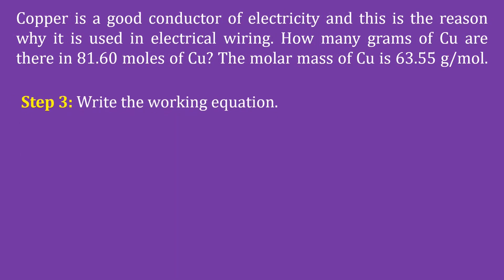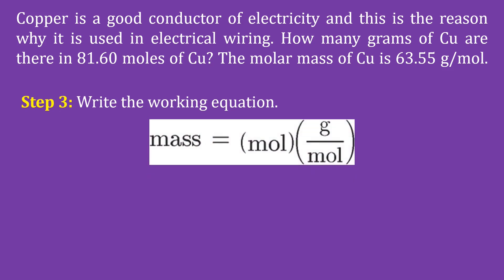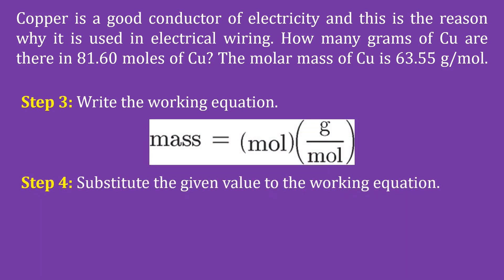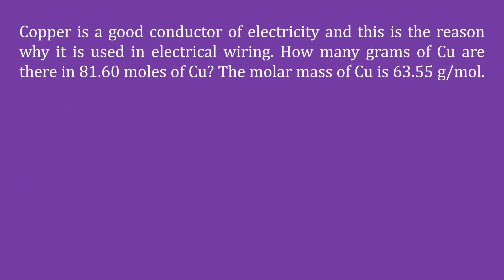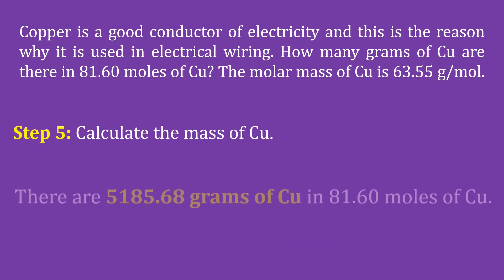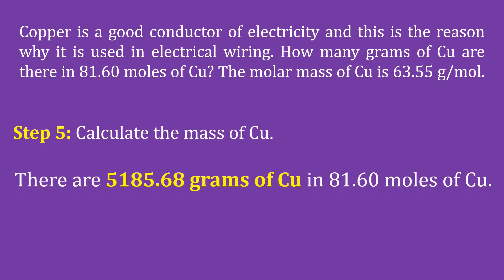Step 3 is to write the working equation: mass = moles × grams per mole. Step 4: substitute the given values — mass = 81.60 moles × 63.55 grams per mole. There are 5,185.68 grams of copper in 81.60 moles of copper.